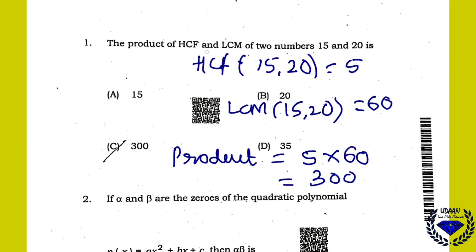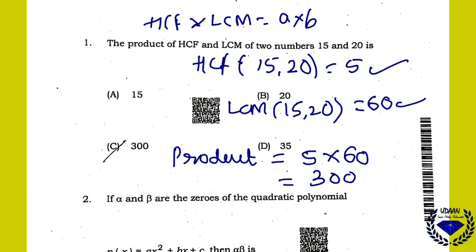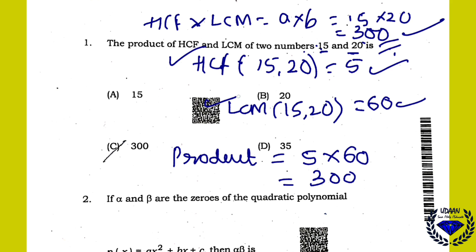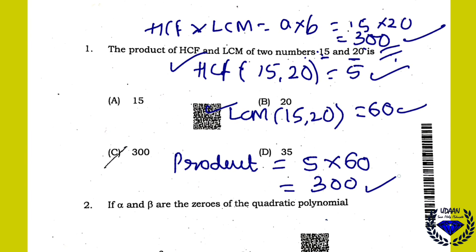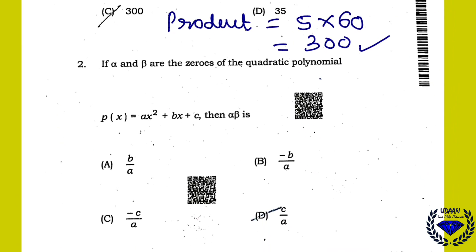Or directly: you know that the product of HCF and LCM equals A×B. So you can just multiply the two numbers: 15×20 = 300. This is your answer. Whether you find HCF and LCM separately or use the direct formula, you will get 300.